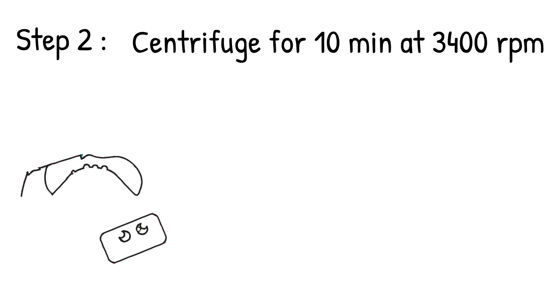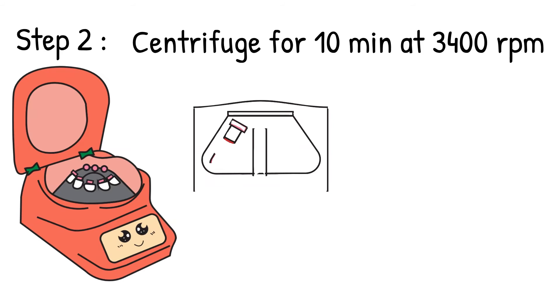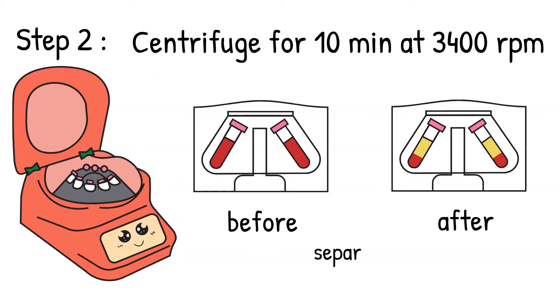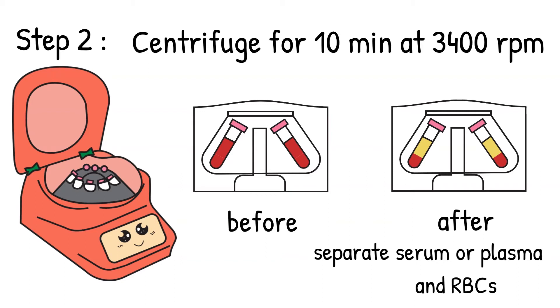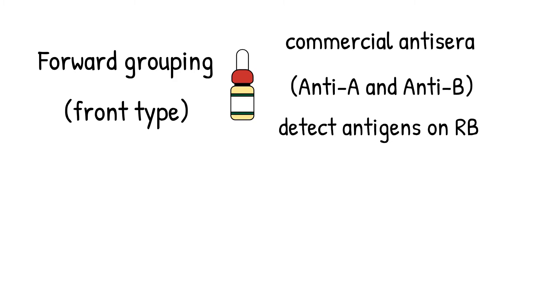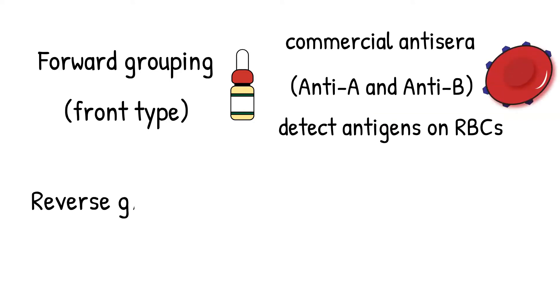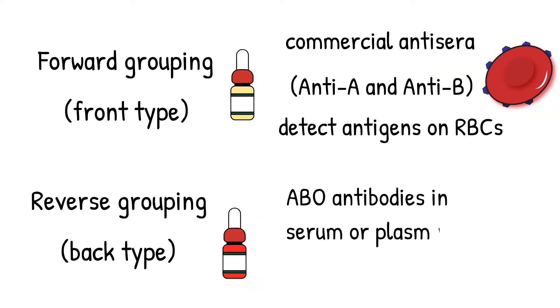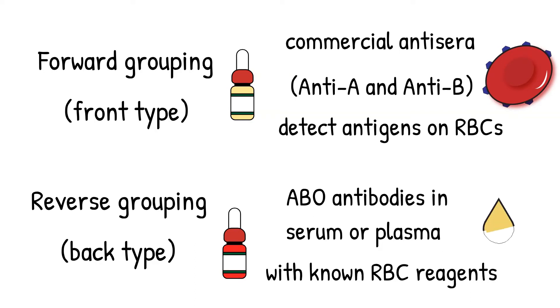Step 2: Centrifuge the sample for about 10 minutes at 3,400 rpm — again, follow your laboratory procedures. This step is to separate the serum and the red blood cells. We have to separate them because ABO typing has two parts: the forward and the reverse type. The forward type uses RBCs, and the reverse uses the serum. Forward typing is defined as using known commercial antiserum to detect antigens on an individual's red blood cells. Reverse grouping is defined as detecting ABO antibodies in the patient's serum by using known red blood cell reagents — A1 cells and B cells.